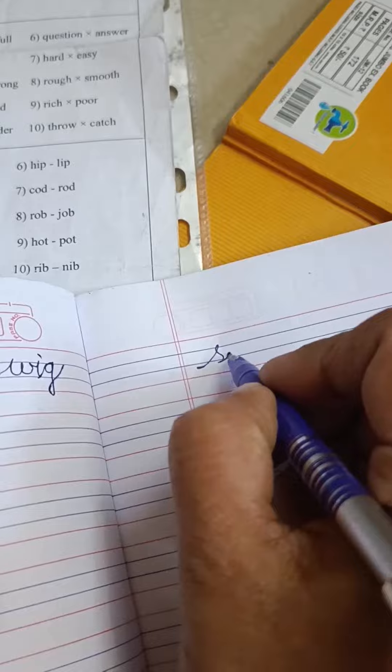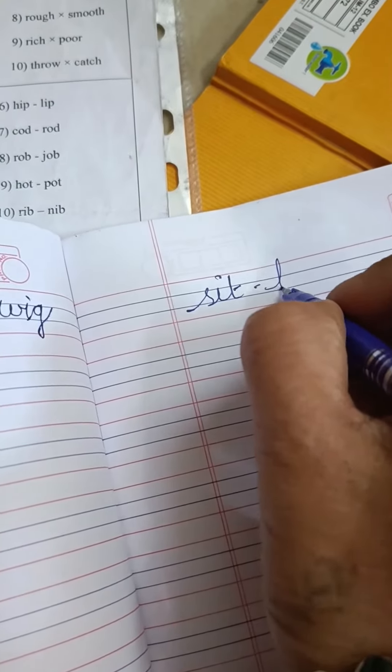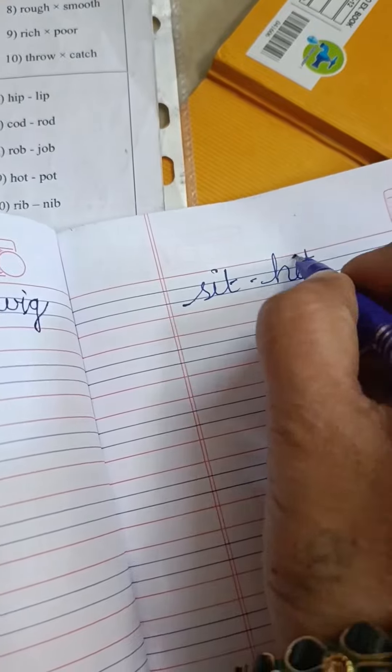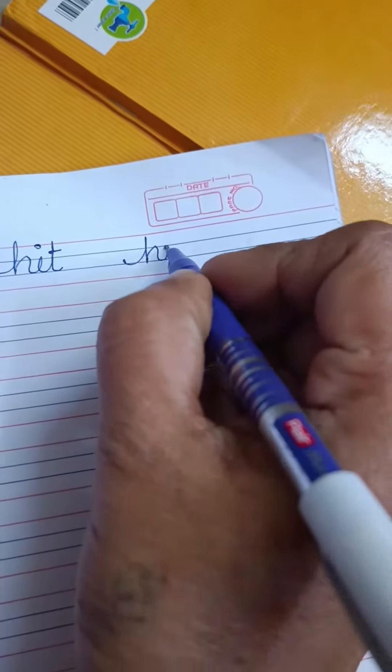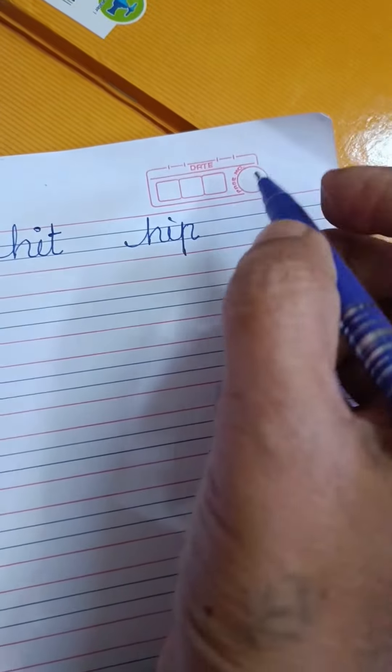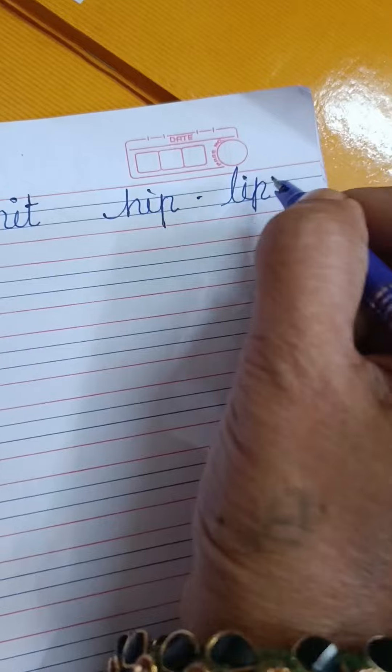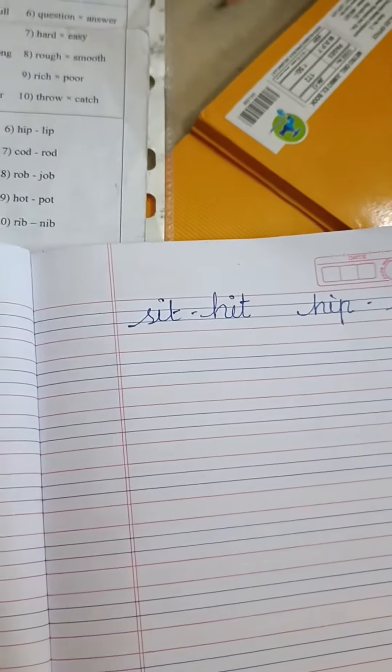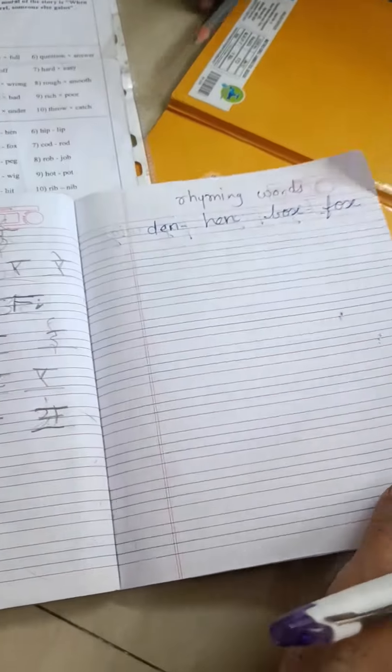S-I-T, sit. S-I-T, hip. S-I-P, sip. L-I-P, lip. These words now we have to read and write rhyming words.